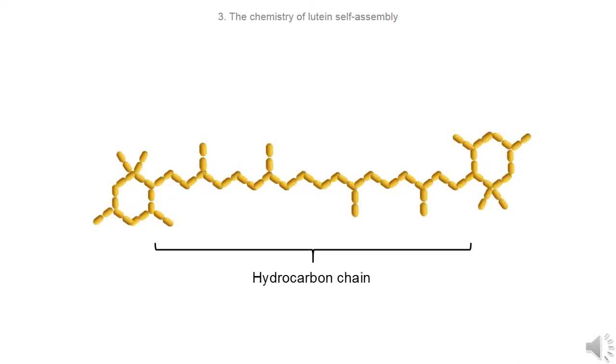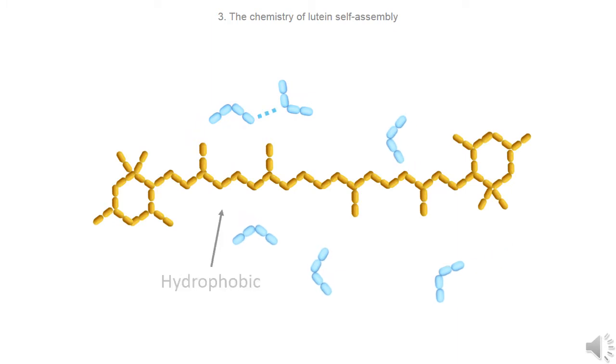Lutein has a hydrocarbon chain which is responsible for the absorption of light. The hydrocarbon chain does not interact well with water as it is hydrophobic.